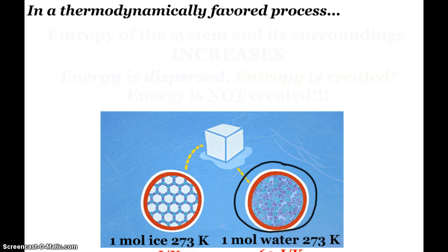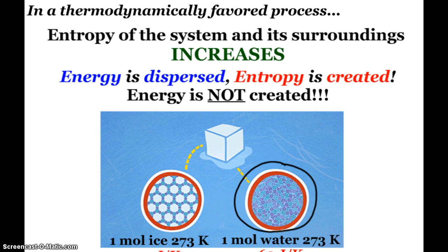So as it says here, in a thermodynamically favored process, the entropy of the system and the surroundings increases. Energy is being dispersed. Entropy is being created. Again, energy is not created. Energy is conserved. We can't create energy, we can't destroy it. But we can create entropy. And we'll continue to work with this concept of entropy as we continue to move onward into the wonderful world of thermodynamics.